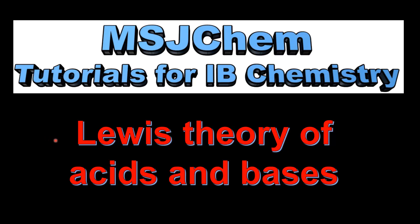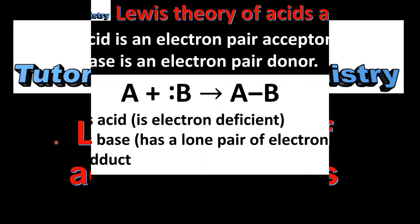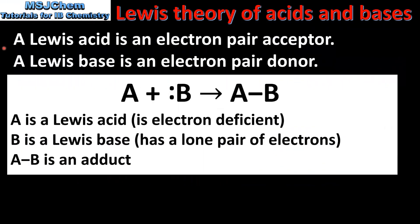This is MSJChem. In this video I'll be looking at the Lewis theory of acids and bases. So let's start with a definition. A Lewis acid is an electron pair acceptor and a Lewis base is an electron pair donor.